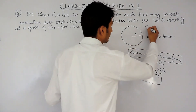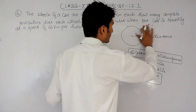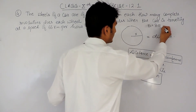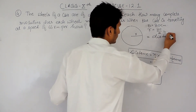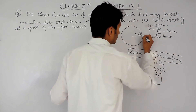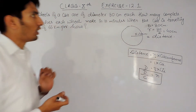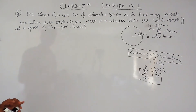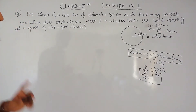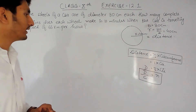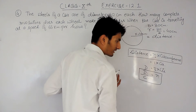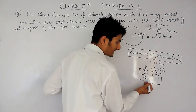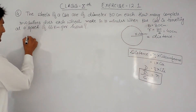In this question, the wheel of a car has a diameter of 80 cm. If the diameter is equal to 80 cm, obviously the radius will be half of it — and half of 80 is 40 cm. So the radius is equal to 40 cm. Now we have to find how many complete revolutions each wheel makes in 10 minutes when the car is travelling at a speed of 66 km per hour. To find the number of revolutions we must know the total distance covered and the circumference.